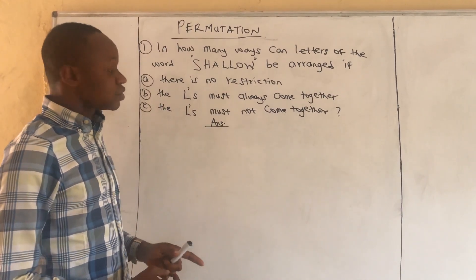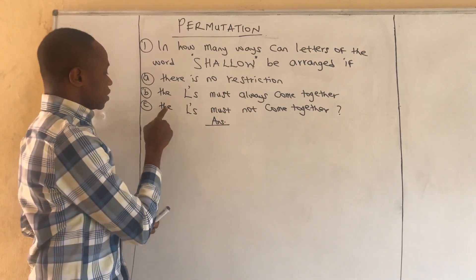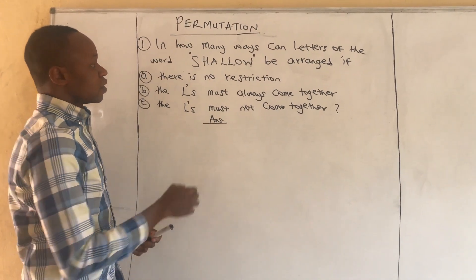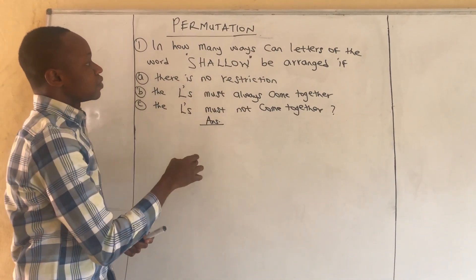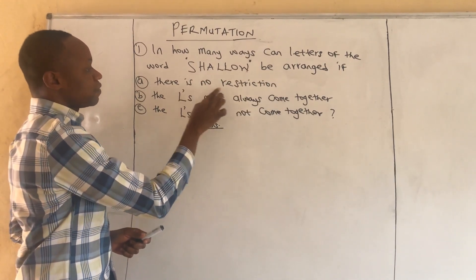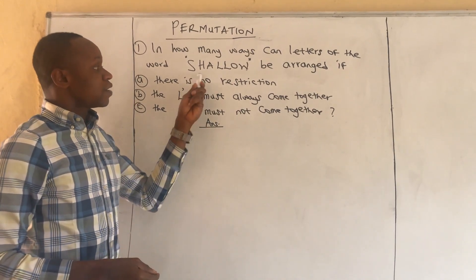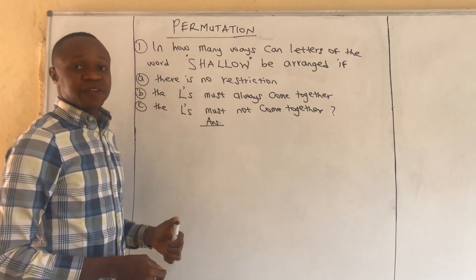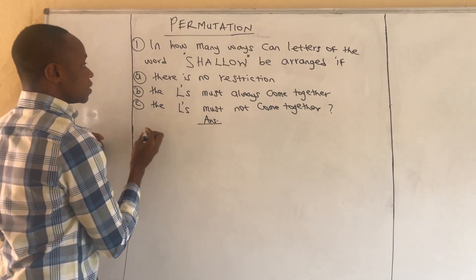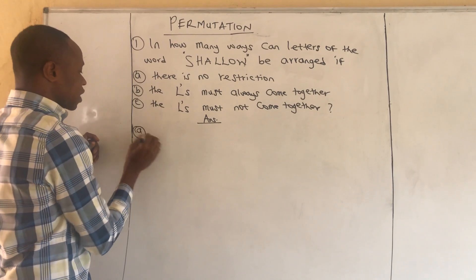The second part of the question asks if the L's must always come together, and the third part asks if the L's must not come together. We answer the first part: in how many ways can letters of the word 'shallow' be arranged if there is no restriction? If there is no restriction, any of these letters can be placed anywhere. So we take the number of ways of arranging the letters of the word 'shallow'.